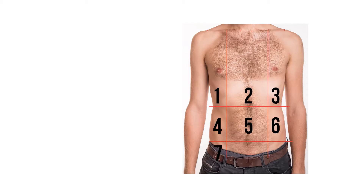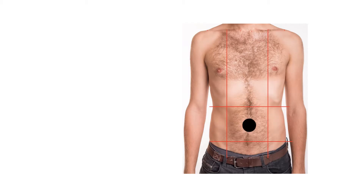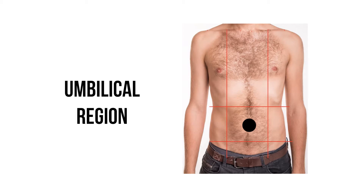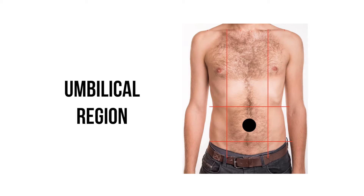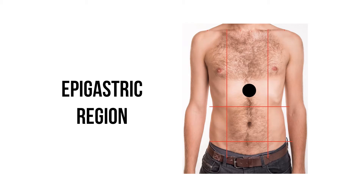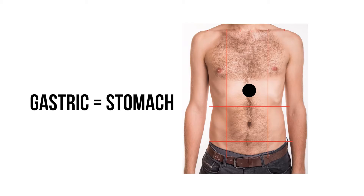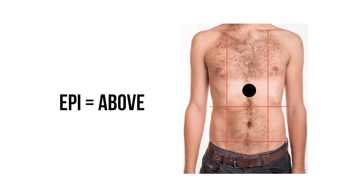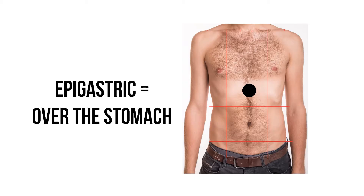Now we have our nine regions, we just need to name them. In the centre, the region containing the belly button or umbilicus is our umbilical region. Above this is the epigastric region. The word gastric relates to the stomach, and epi is Greek for above, so this is the region over the stomach.